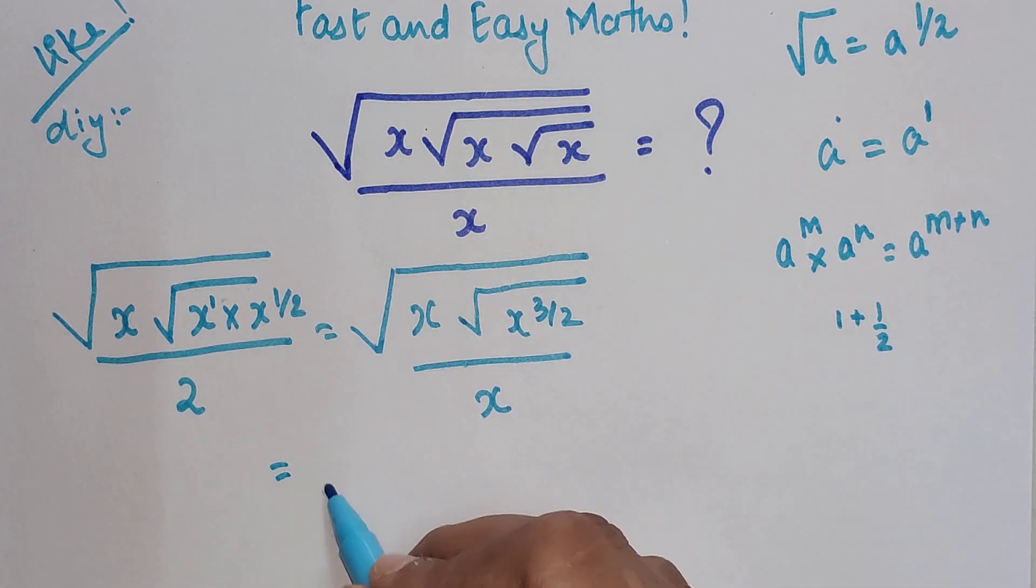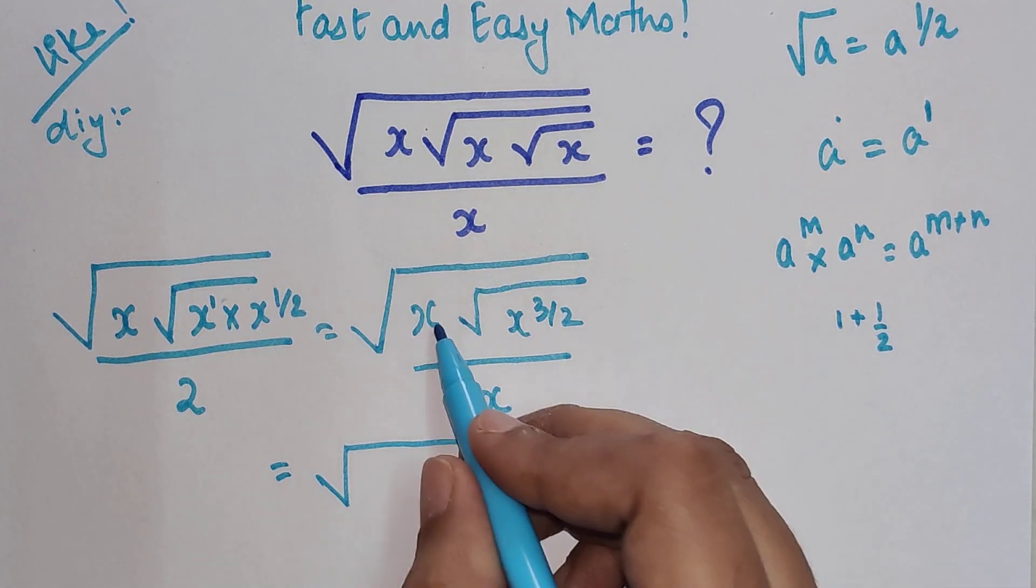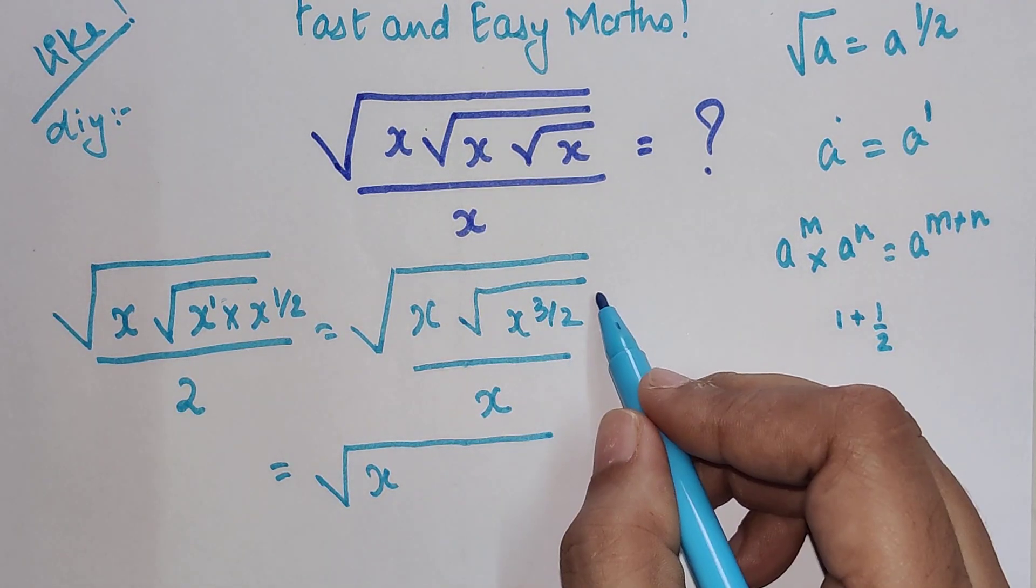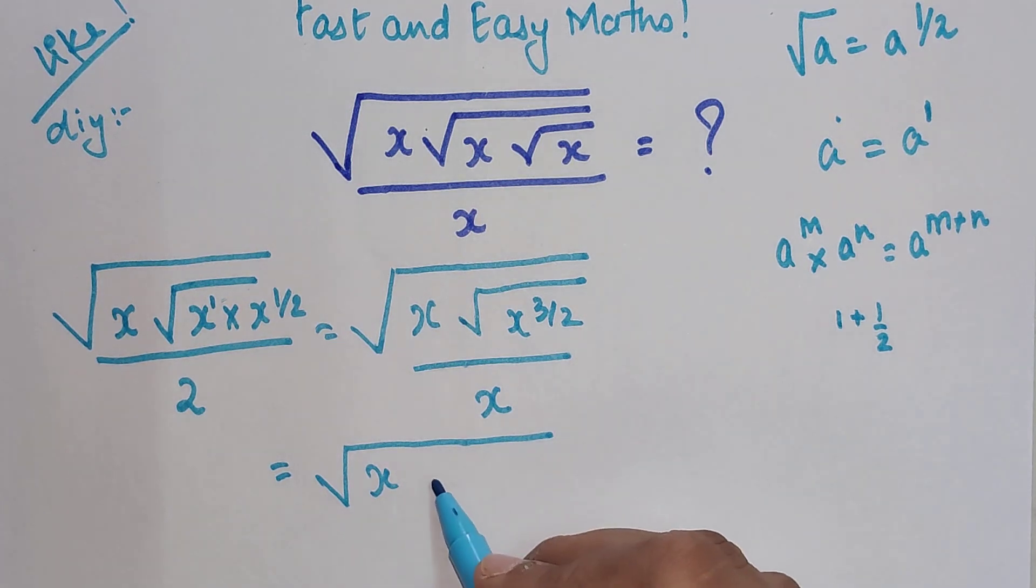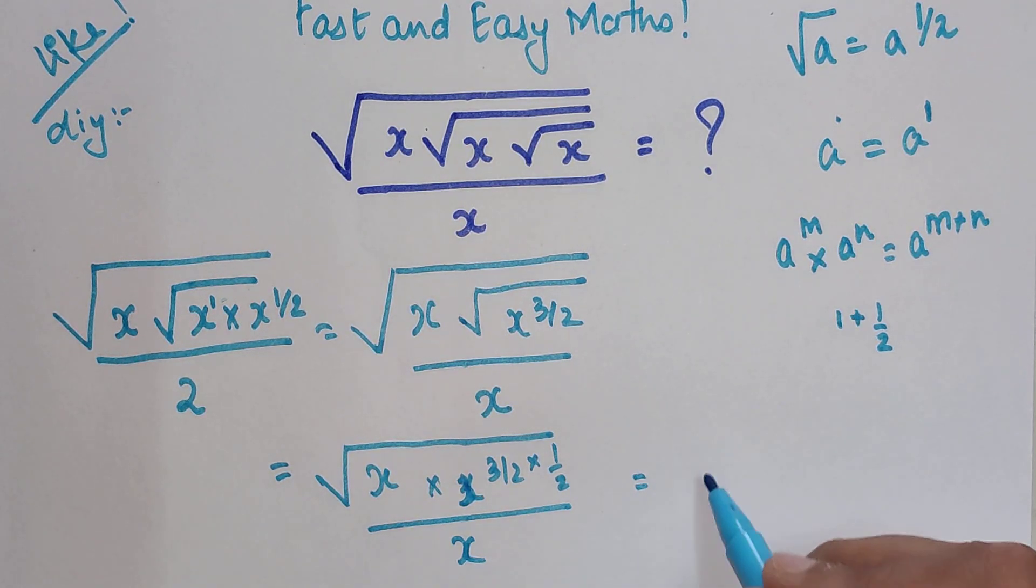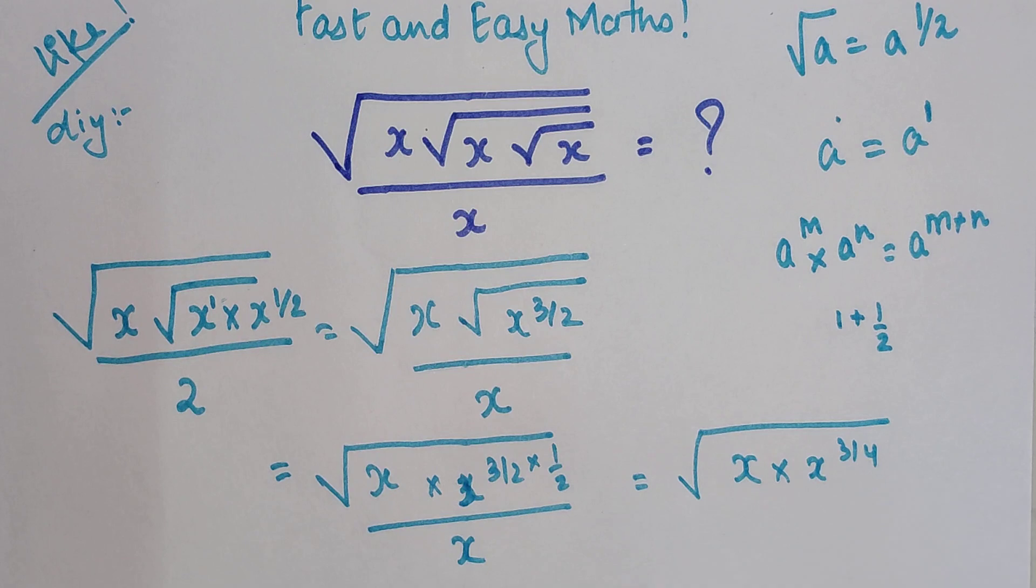So I can write this as, now let the bigger or the first root x remain as it is. And this root, when it goes on the index, becomes x raised to 3 by 2 into 1 by 2 upon x. So this now becomes x into x raised to 3 by 4. 3 by 2 into 1 by 2 is nothing but 3 by 4 upon x.